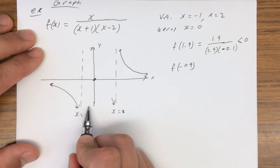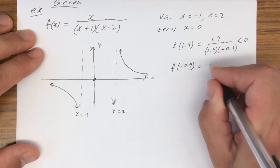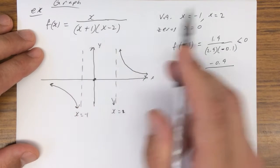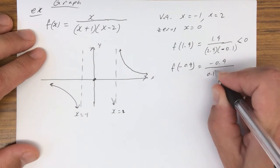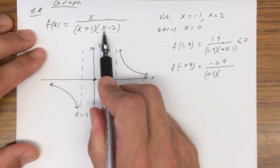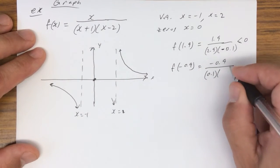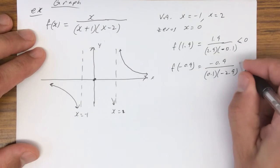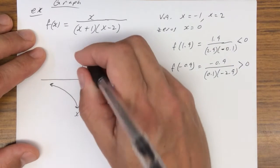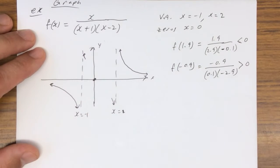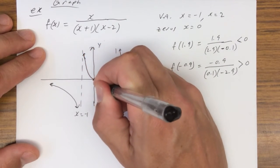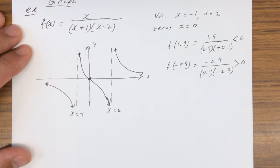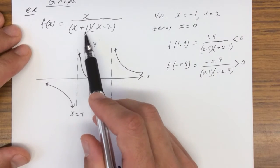Just to the right of the negative 1 asymptote, plug in f(-0.9): you get negative 0.9 over (negative 0.9 plus 1), which is 0.1, times (negative 0.9 minus 2), which is negative 2.9. We have a negative divided by a negative, which is greater than 0, so it's going to be up here. So this function goes through like that and comes down.